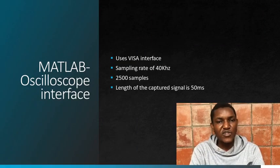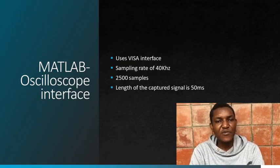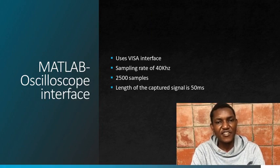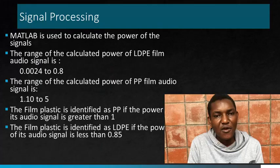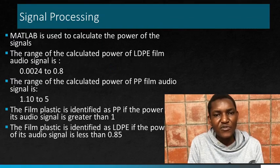We used the oscilloscope to capture the signals and then did signal processing using MATLAB to find the power of the signals. We used the power to distinguish between the film plastics.